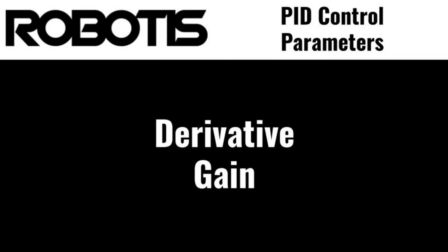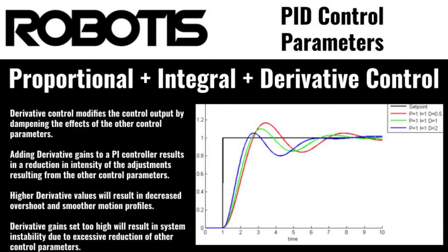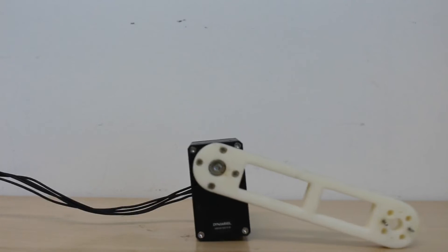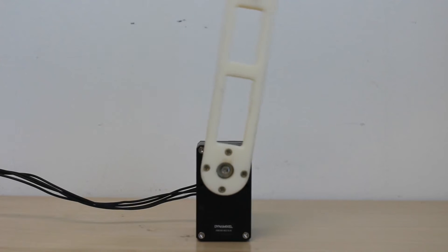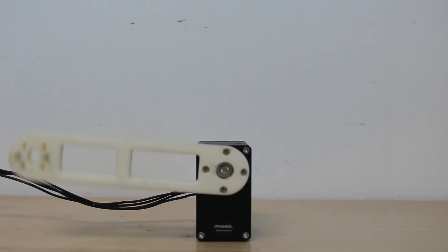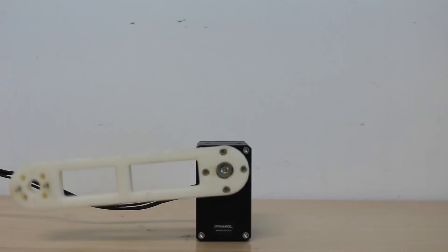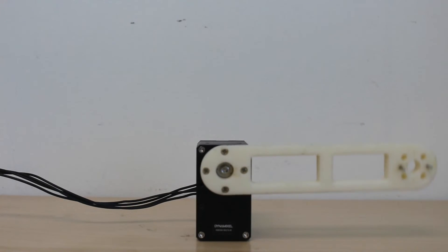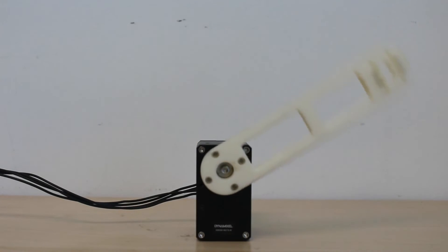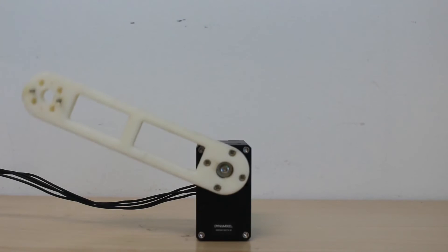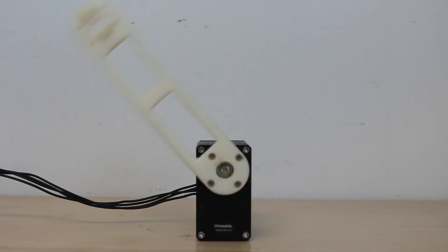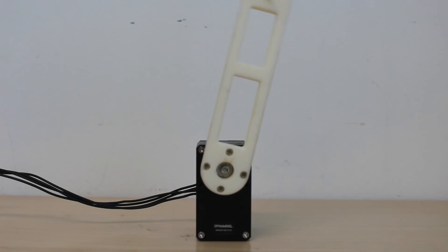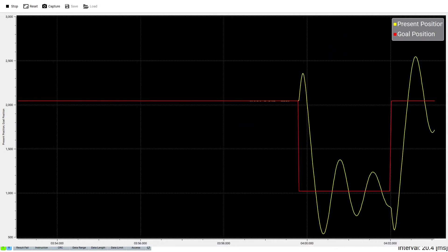The derivative gain can best be described as a smoothing or damping effect applied to P and I gains, in order to create a smoother motion profile and reduce the likelihood of overcorrection or other errors. To see the effect of adjusting D gain, let's set P gain to 80 and I gain to 1000. With these settings, the actuator will oscillate around the desired goal position as it repeatedly overshoots and attempts to correct itself. If we set D gain to 10,000, you'll notice that the initial movement and the oscillation have slowed down significantly. The D gain has modified both P and I gains to reduce the intensity of their effect on the motion of the actuator, allowing for finer-tuned control than either gain by themselves.